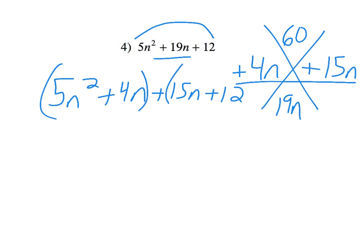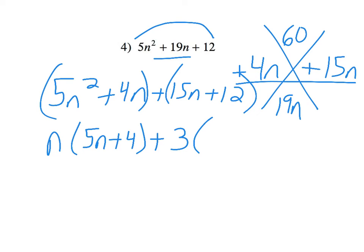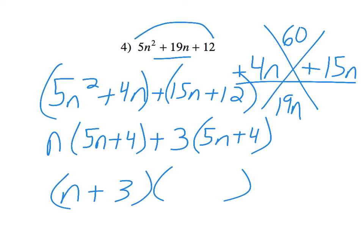Now, I'm going to group. So, five n squared and four n — I can take out an n, and I'll be left with five n plus four. Plus, fifteen and twelve — I can factor out three. Fifteen divided by three is five n. Twelve divided by three is four. So, I would have n plus three times five n plus four. And we are done.